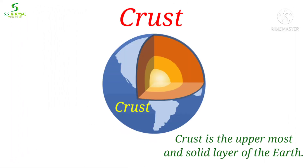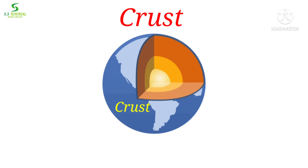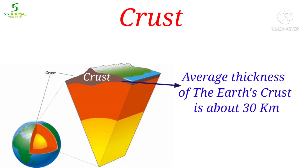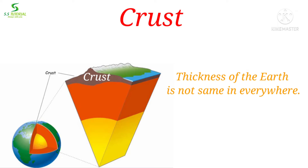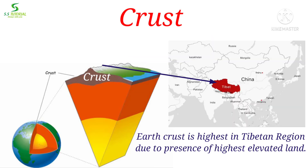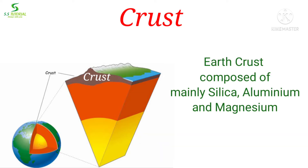Let's know about the crust. The crust is the uppermost and solid layer of the earth where we are living. It is the most younger layer of the earth. Only 1% of the earth's volume and 0.5% of the earth's mass are made of the crust. The average thickness of the earth's crust is about 30 km, though the thickness is not the same everywhere. The thickness gradually increases from the coast to the middle of the continent, and is highest in the Tibet region. The earth's crust is composed mainly of silica, aluminium, and magnesium.